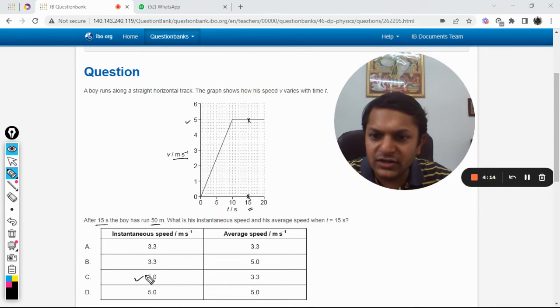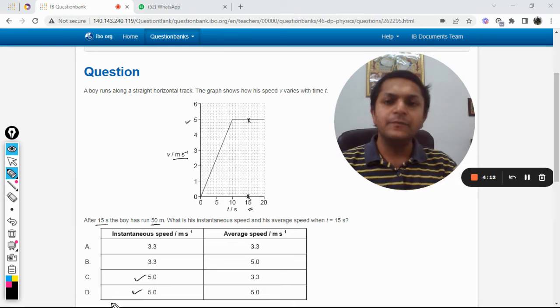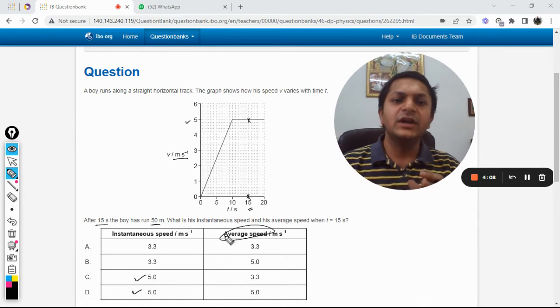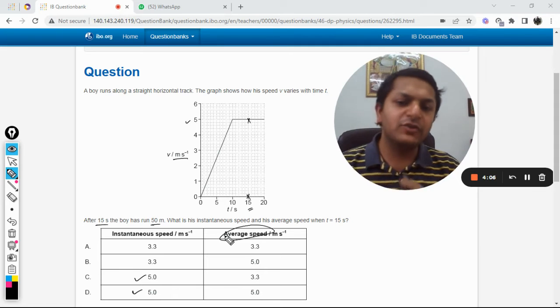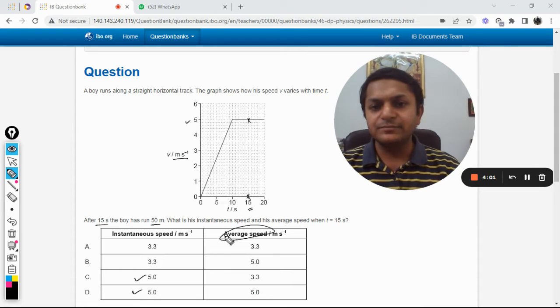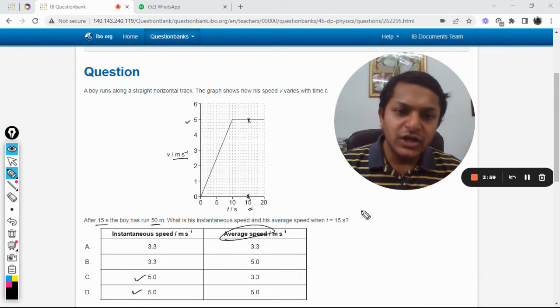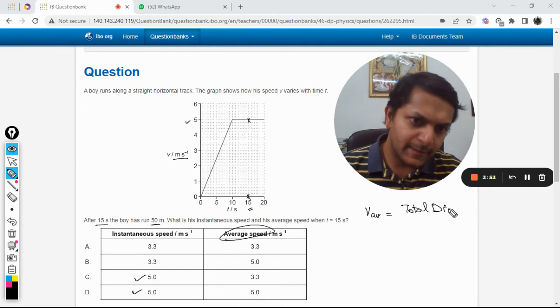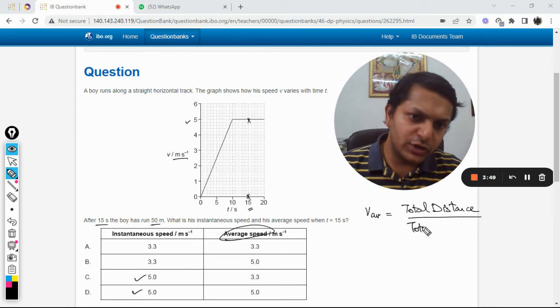The second part of the question asks for the average speed. For average speed, we have to use a formula because it's not actually given in the graph. The formula is: average speed equals total distance divided by total time.